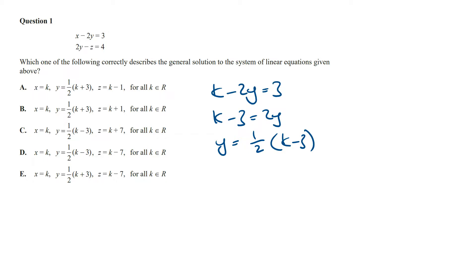And now subbing this into the second equation, we're going to get 2 times a half times k minus 3 minus z is equal to 4. The 2 and a half will cancel out, and so we've got k minus 3 minus z is equal to 4. Solving for z, k minus 3 minus 4 is going to equal z, which means z is equal to k minus 7,